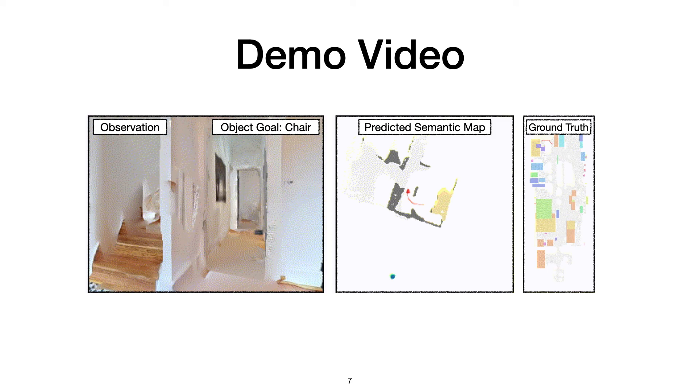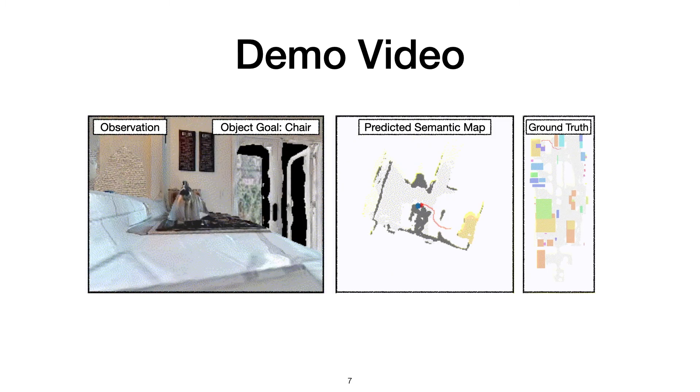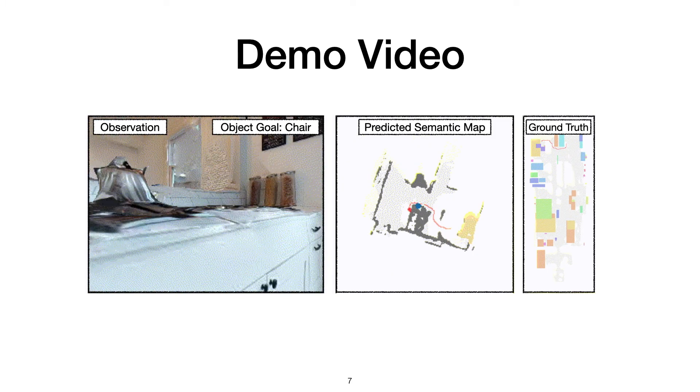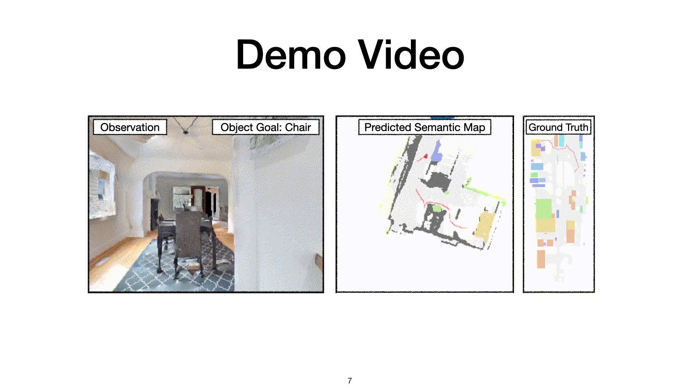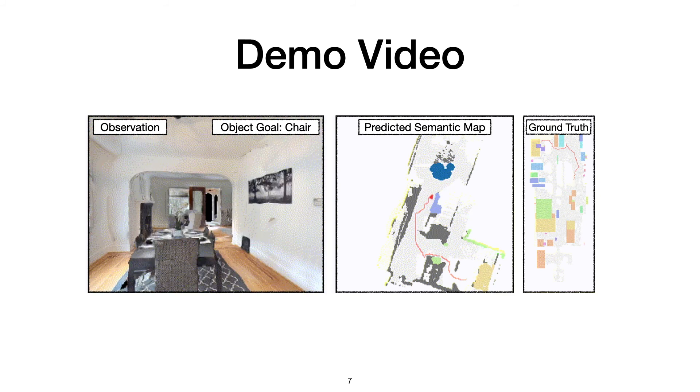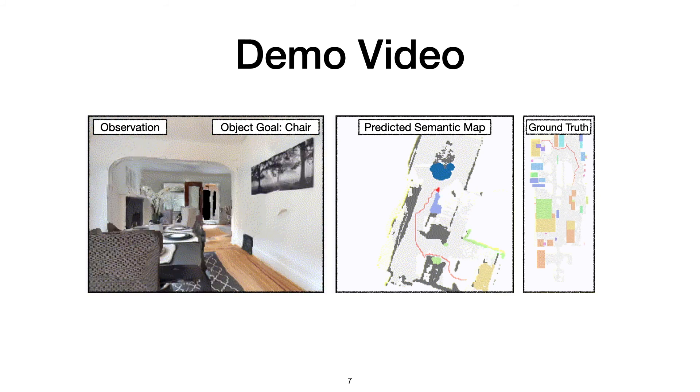Here we show a demo video of our model where the agent is asked to navigate to a chair. The RGB observations are shown on the left and the predicted semantic map is shown in the center. The long-term goal selected by the goal-driven semantic policy is shown in blue on the semantic map. The ground truth is shown on the right for reference. This example shows that the agent is able to successfully navigate to the chair in an efficient manner.